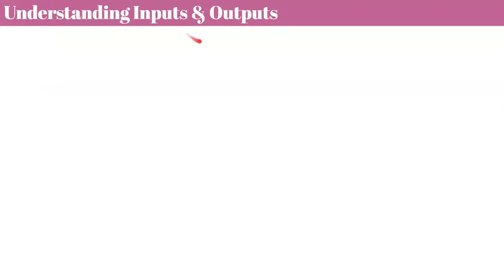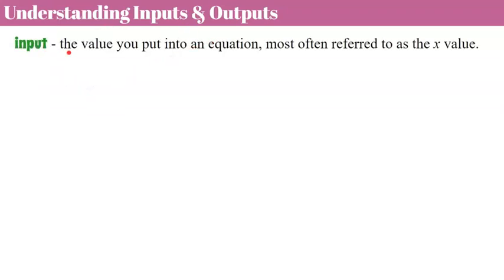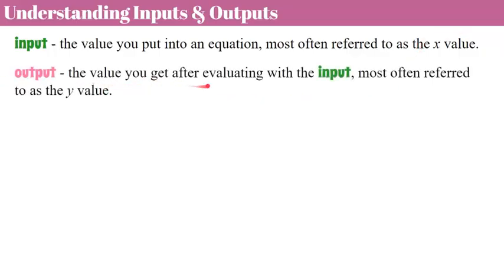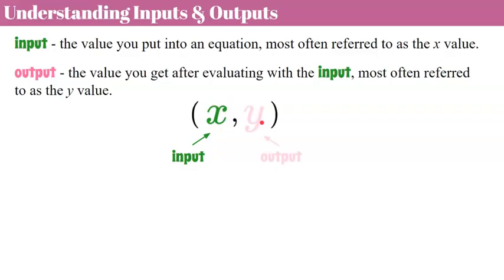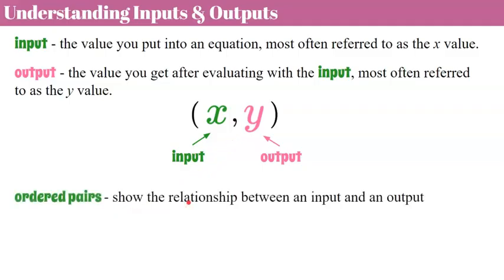First we need to understand inputs and outputs. An input is the value you put into an equation, most often referred to as the x value. An output is the value you get after evaluating with the input, most often referred to as the y value. We see inputs and outputs organized as an ordered pair: x, our first value, is our input and y, our second, is our output. They are in parentheses and separated by a comma. Ordered pairs show the relationship between an input and an output, and this relationship is what we're going to focus on today.